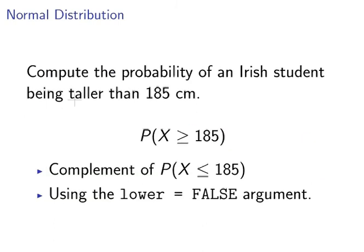Compute the probability of an Irish student being taller than 185 centimetres. That is the complement of being less than or equal to 185 centimetres. Actually, the equality component of the operator is not really that important. What we are going to do is find the complement of 185 centimetres, the cumulative distribution for that. And we're also going to look at how to use the lower equals FALSE argument, which is how we might implement the complement of a cumulative distribution function.